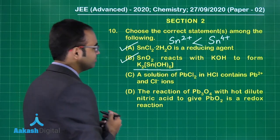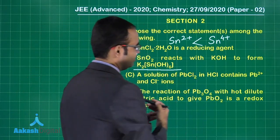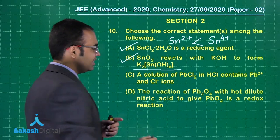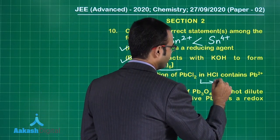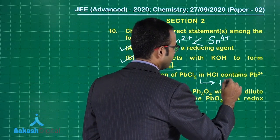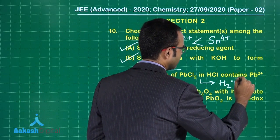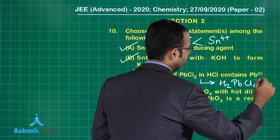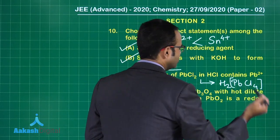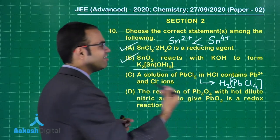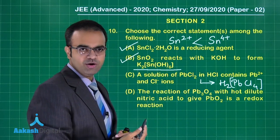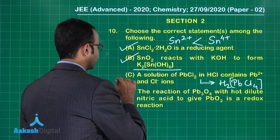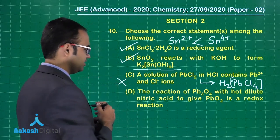Third option: PbCl₂ and HCl. If I take PbCl₂ and HCl, this will give you H₂PbCl₄. So you will not have free Pb²⁺ ions. Option C is wrong.